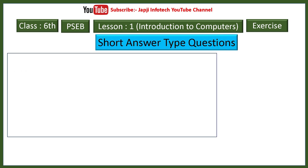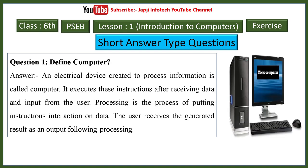Now we will learn about short answer type questions. First question: define computer. An electronic device created to process information is called a computer. It executes instructions after receiving data and input from the user. Processing is the process of putting instructions into action on data. The user receives the generated result as an output following processing.